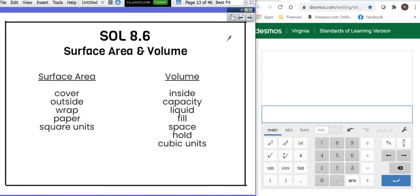Hey everybody, we're gonna do surface area and volume. The first thing we want to talk about is some keywords.